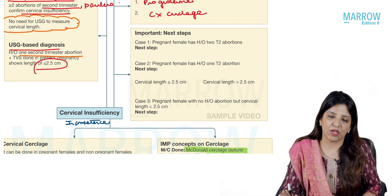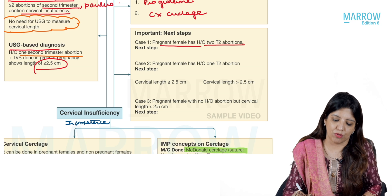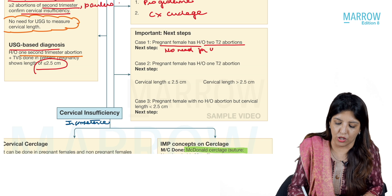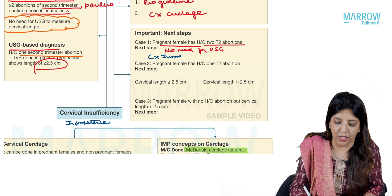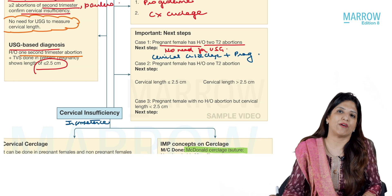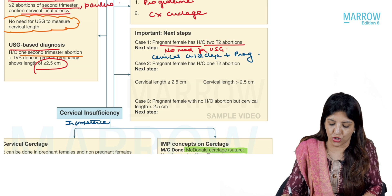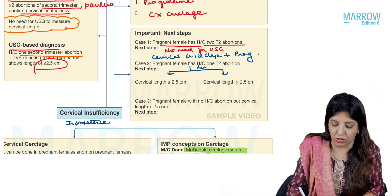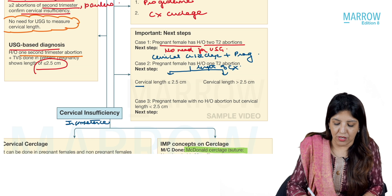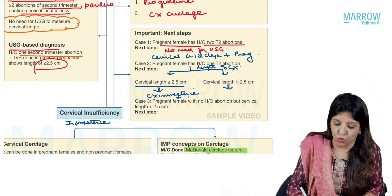If a pregnant female has a previous history of two second trimester abortions, there is no need for ultrasound — you directly proceed to cervical cerclage, and you also give progesterone. If there is a history of only one second trimester abortion, the next step is to measure the cervical length. If the length is less than or equal to 2.5 cm, that confirms cervical incompetence, and you do cervical cerclage plus progesterone.